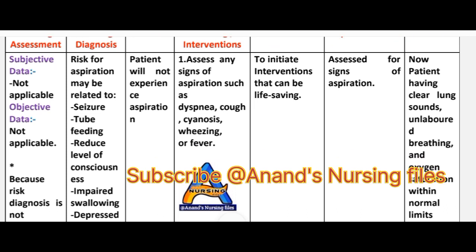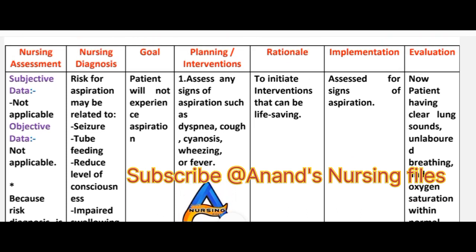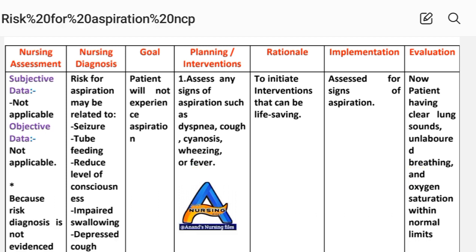There are many risk factors, such as seizure, anesthesia, tube feeding, and reduced level of consciousness. You write the nursing diagnosis according to your patient's condition — for example, risk for aspiration related to tube feeding.